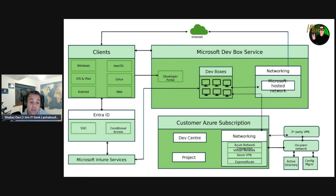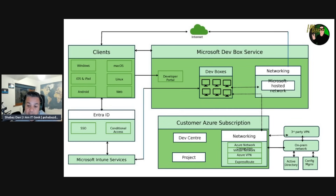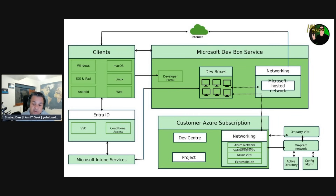The two things I really want to talk about are the networking and the Intune integration. On the architecture diagram you can see networking towards the right — you've got your Microsoft hosted network in the Dev Box service, but also in the customer subscription we've got networking options like Azure Virtual Network, Azure VPN, ExpressRoute, third-party VPN, and on-premises network. The network connection controls where Dev Boxes are created and hosted, and it enables you to connect to all Azure or corporate resources depending on your level of control. You can use Microsoft hosted virtual connections or bring your own Azure virtual connections.